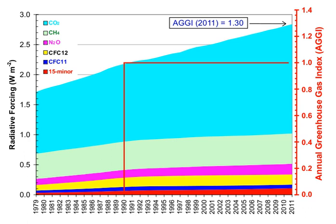The major non-gas contributor to Earth's greenhouse effect, clouds, also absorb and emit infrared radiation and thus have an effect on greenhouse gas radiative properties. Clouds are water droplets or ice crystals suspended in the atmosphere.